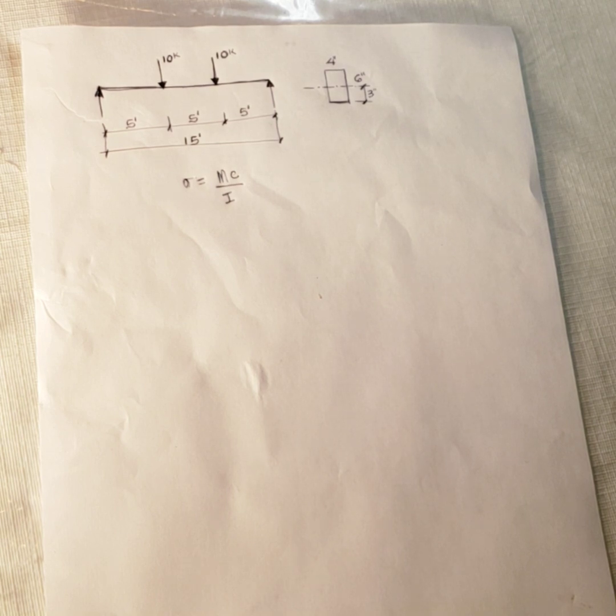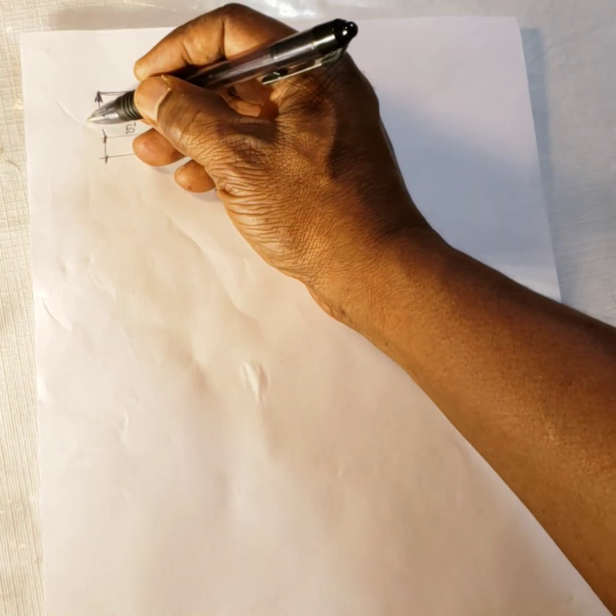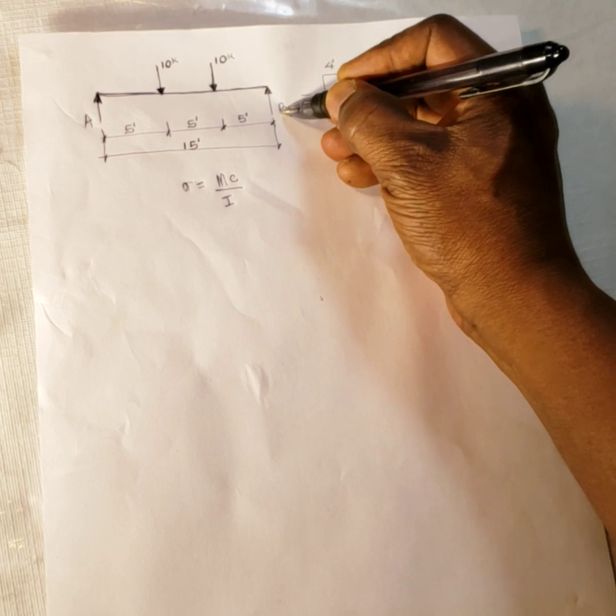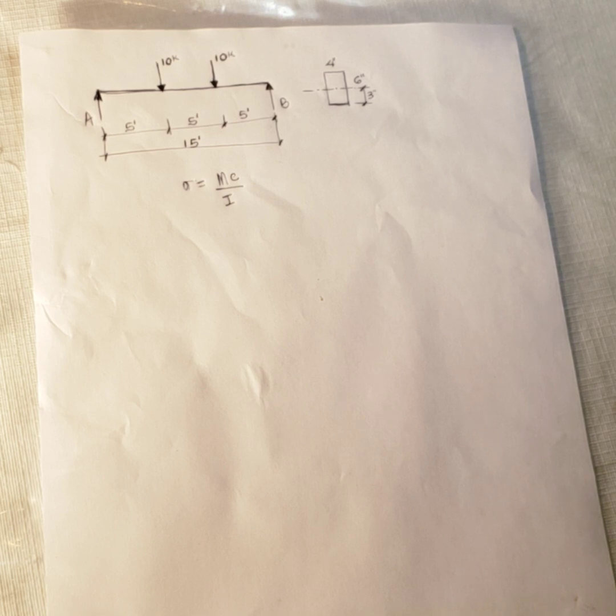So like I said, you need to solve for the reactions first. You could use the long method which is solving for the reactions by taking moment about one of your support, support A or B. But you don't really have to do that in this problem because it's very straightforward. You can look at it by inspection and realize that the point loads are evenly spaced out and they are equal. So they create a symmetry on the top. They are spaced out five feet apart and they are ten feet each.